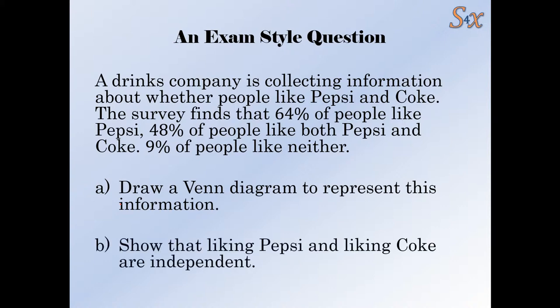And then I want you to try and show by using the formula on the previous page. So probability of A times the probability of B equals the probability of A and B if they're independent. If that's true, then they are independent. If it's not true, they're not independent.